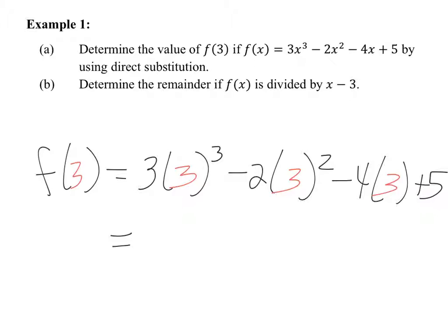What do you get for part A? What do you got? 92. 92. Agree? Disagree? Others check.